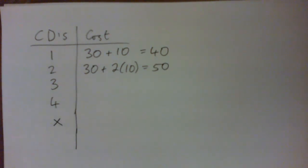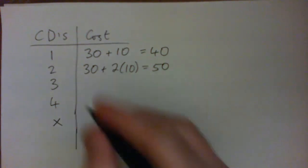So put in X and then find the formula. The trick is, what would the cost be for X CDs? Take your time. Yep, that's all. Well, not too close.